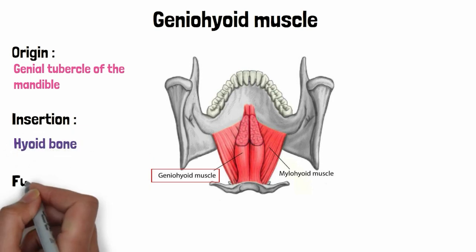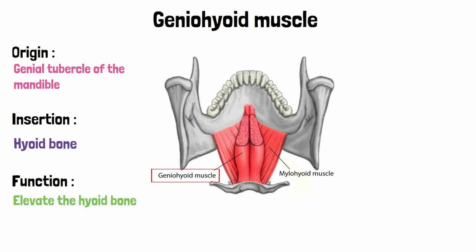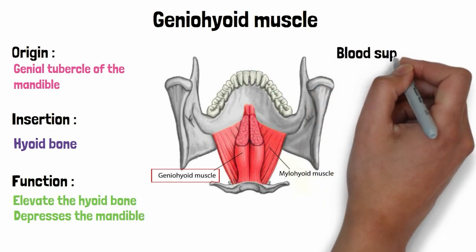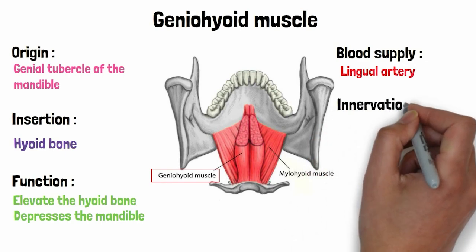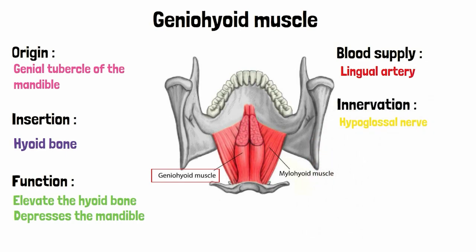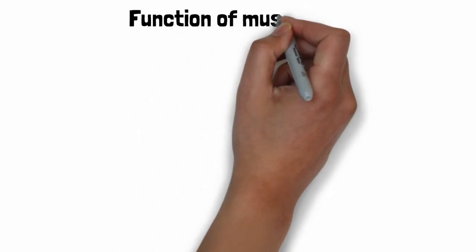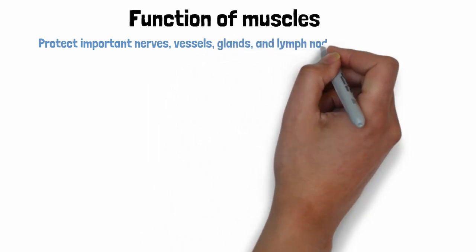The pair of geniohyoid muscles functions to elevate the hyoid bone and bring it forward. They also depress the mandible when the hyoid bone is fixed. The blood supply of this muscle is from the sublingual branch of the lingual artery, and it is innervated by the first cervical spinal nerve through the hypoglossal nerve. These muscles forming the floor of the mouth — the mylohyoid muscle and the geniohyoid muscle — are supported by various underlying tissues. One of the major functions of these muscles is to protect the important nerves, vessels, glands and lymph nodes present below the floor of the mouth.